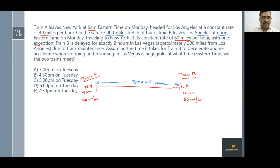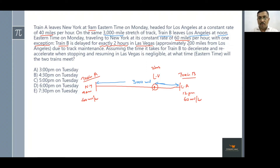There is an exception given — let's take note of it. Train B is delayed by exactly two hours in Las Vegas. Let's mark this point as Las Vegas on our diagram, and it got delayed by two hours. It's also given that Train B had covered approximately 200 miles before the Las Vegas stop, so we mark that this point is 200 miles from Los Angeles.